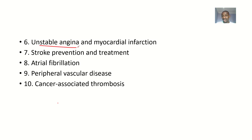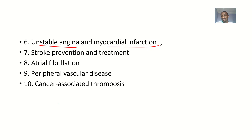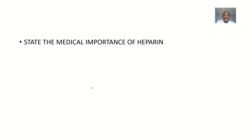It can be used in disease conditions like unstable angina — when there is formation of thrombus and a likelihood of the thrombus breaking and blocking distal places. It can be used in myocardial infarction, where narrowing of blood vessels by fat deposition slows blood movement, so you give the patient heparin to keep blood in a liquid state. It also helps in the prevention and treatment of stroke, atrial fibrillation, peripheral vascular disease, and cancer-associated thrombosis. All of these are the 10 medical importances of heparin.